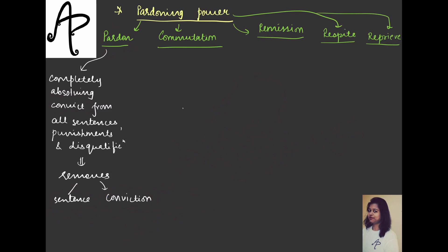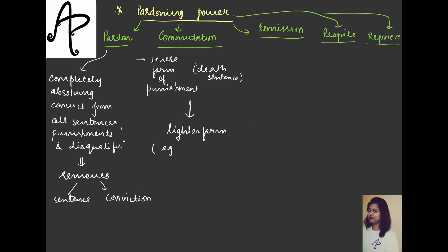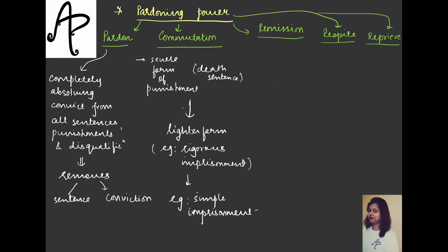The next term is commutation or commute. This is basically about reducing something. Let's say there is a very severe form of punishment — something like a death sentence. That is very severe. If you go to a lighter form, for example rigorous imprisonment or life term imprisonment, that is still slightly lighter than death sentence. And what can be even lighter? Simple imprisonment — jail but not very rigorous. So when the punishment is shifted or substituted from a very severe to a lighter form, that is commutation.